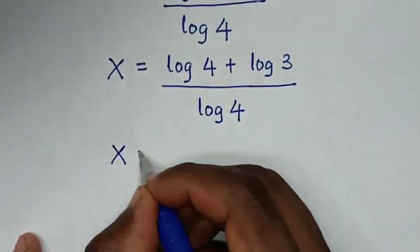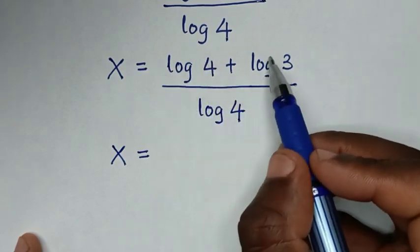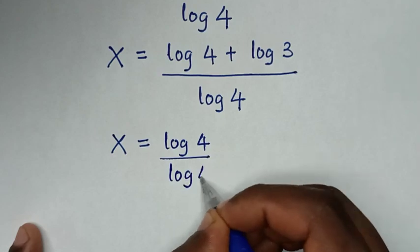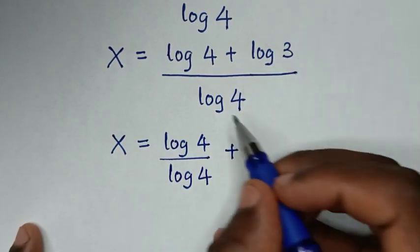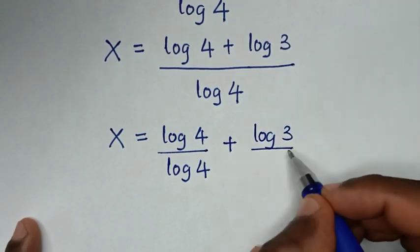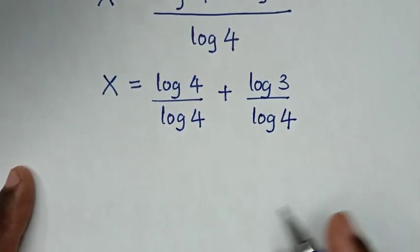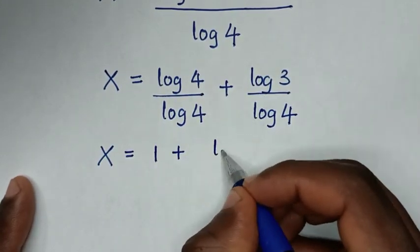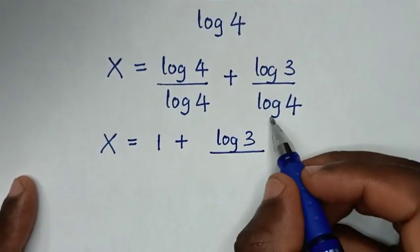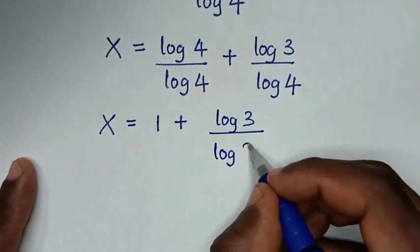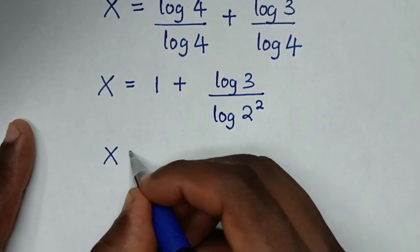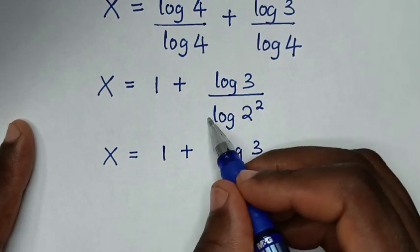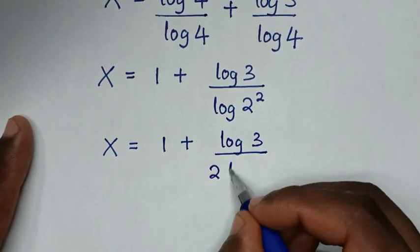Then x is equal to — we divide log of 4 into each part of the numerator. So it becomes log of 4 over log of 4, plus log of 3 over log of 4. Log of 4 over log of 4 equals 1. And since 4 is the same as 2 squared, log of 4 equals log of 2 squared, so this becomes 2 log of 2. Therefore x is equal to 1 plus log of 3 over 2 log of 2.